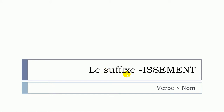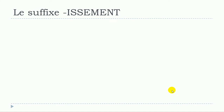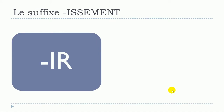In this lesson we'll cover le suffixe '-issement'. The idea is to see how we could make nouns — or substantives — starting from verbs.